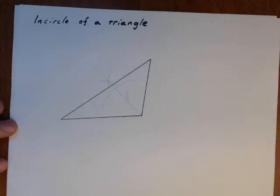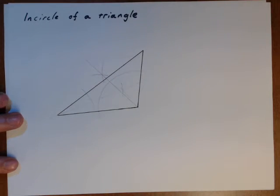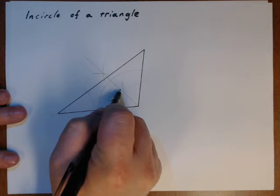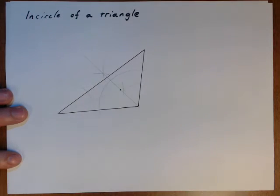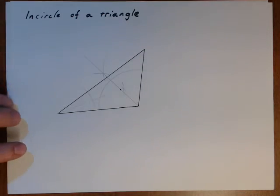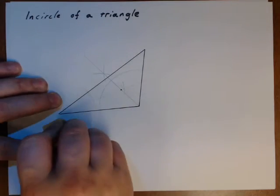Now that we've found the point that we're interested in, which was the intersection of the two angle bisectors, we can go ahead and clean up all of our markings.